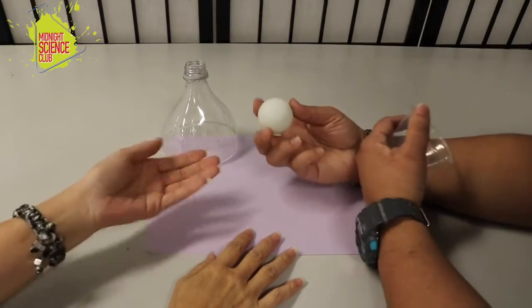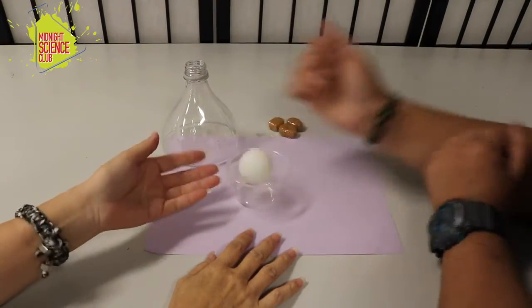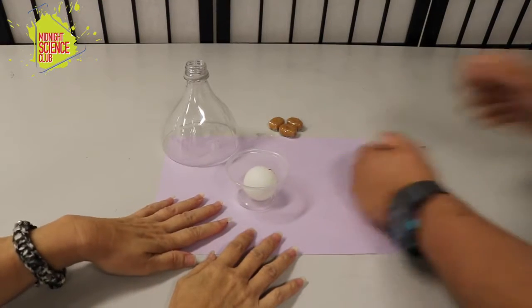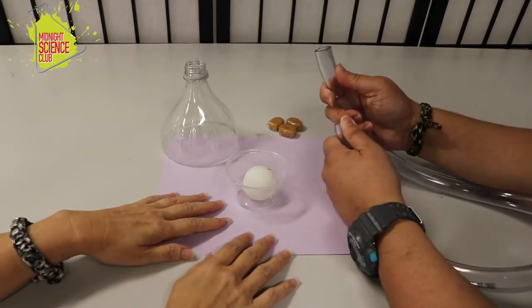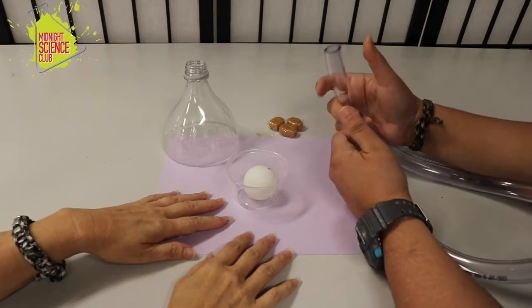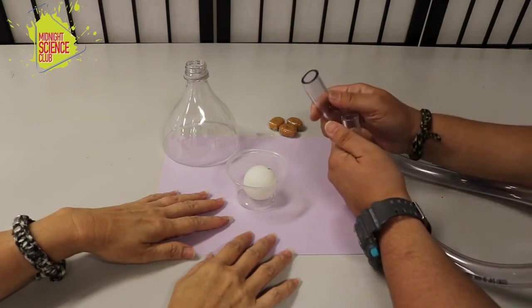The next thing that we're going to need is a ping pong ball. I've got a little cup here just so the ping pong ball doesn't roll away. And the last thing we're going to need is a bit of tubing like this. Again we're using clear so you can see there's no tricks or anything involved.